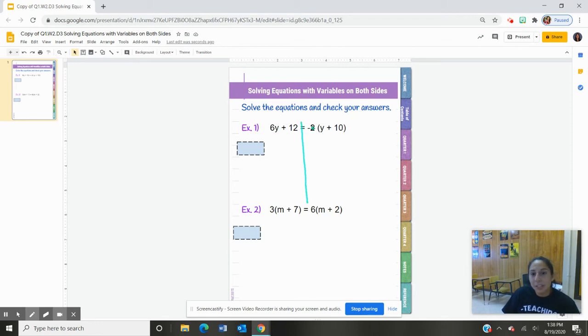So the first thing we're going to do is we want to get rid of our parentheses. If it ever has parentheses, your first step is to get rid of those. So I'm going to multiply everything on the right hand side by negative two to get rid of those parentheses right here. So I have 6y + 12, I didn't do anything to that, is equal to negative two times y, that's -2y, and negative two times 10, that's -20.